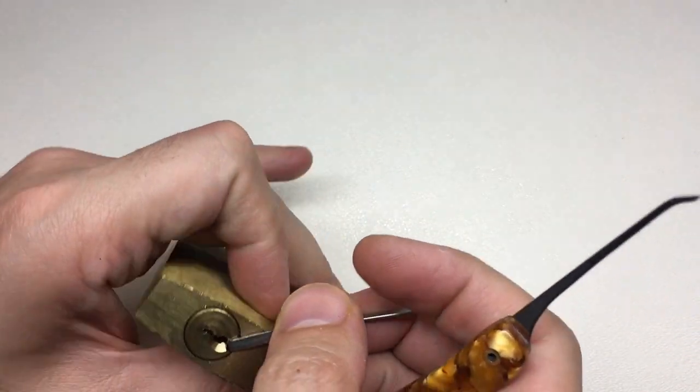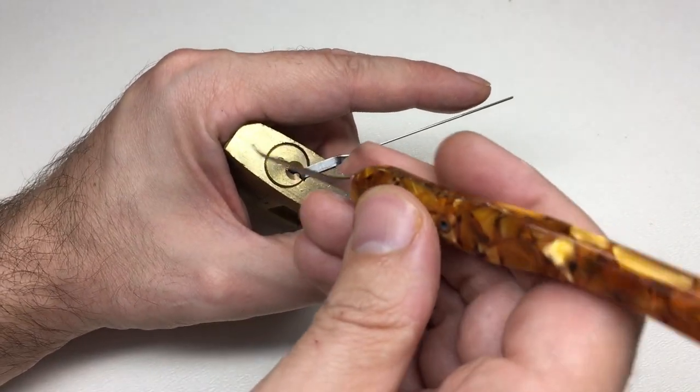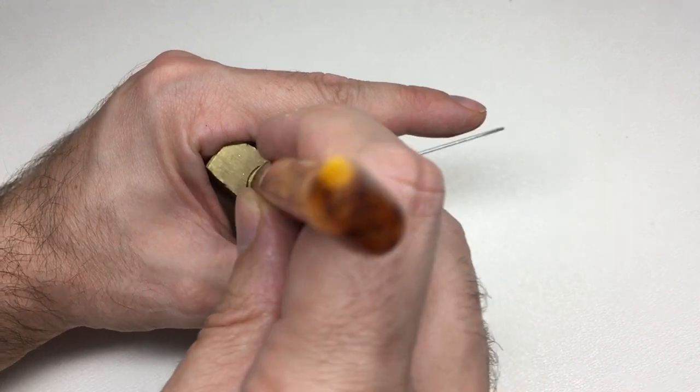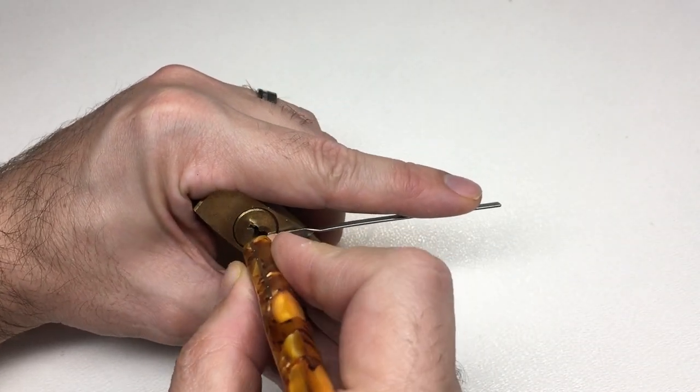I'll throw in some tension, keep it light. What I'm going to do is work from the back forwards. Using this beautiful pick from a friend in New Zealand, I'm going to put the pick all the way down, then put tension on, pull the pick back, and when I find a pin which is firm, push up.